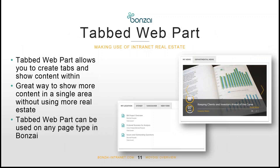The first new feature in Bonsai Miyogi is the concept of a tabbed web part. Think of this as a way to make the most use of your intranet real estate. We got a lot of feedback from clients where their homepages started to get pretty long — maybe five or ten document libraries on a single page — and they wanted the ability to make use of that real estate more effectively. The tabbed web part allows you to show content in tabs, and we've tried to make it very easy for an end user to set up.